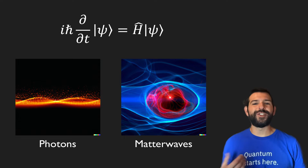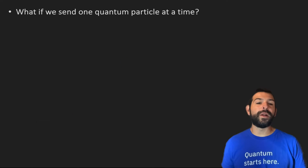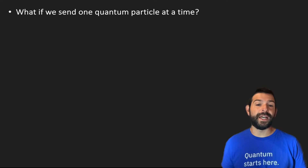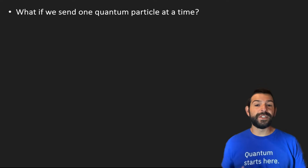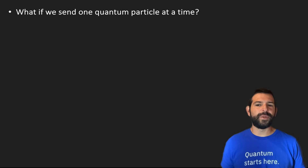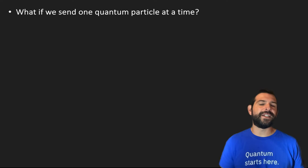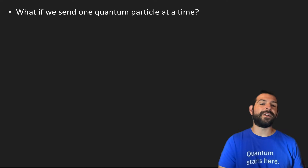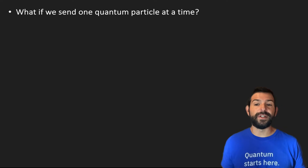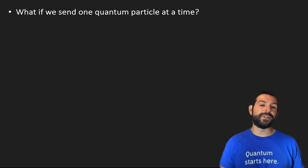So the question is: what happens in the double-slit experiment if we send one particle at a time? Well, the theory is very clear about this, and it says that we should in fact see an interference pattern. But this was very hard to believe until an actual experiment was carried out.